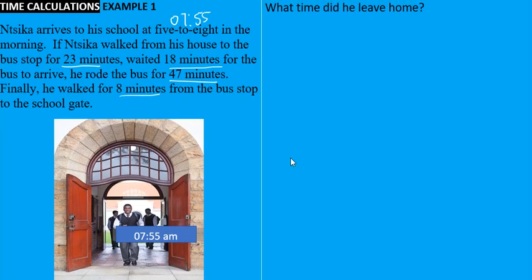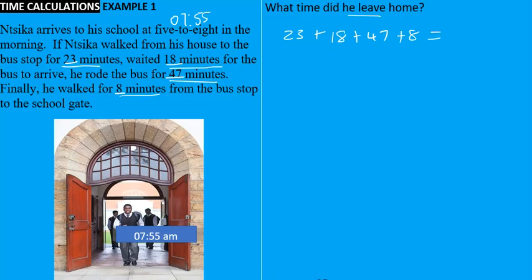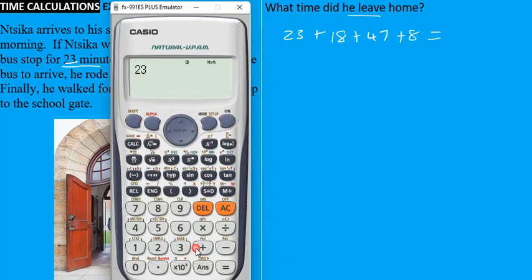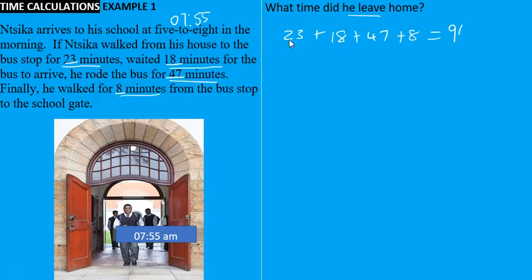The question is: what time did he leave home? We can solve this by taking the time he arrived at school and subtracting all the other times. We can add all the times that elapsed since he left home: 23 minutes, 18 minutes, 47 minutes, and finally 8 minutes from the bus stop to the school. If you add all those times, the total time that passed since he left home is 96 minutes.